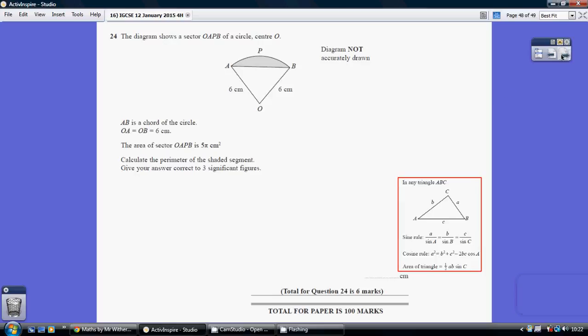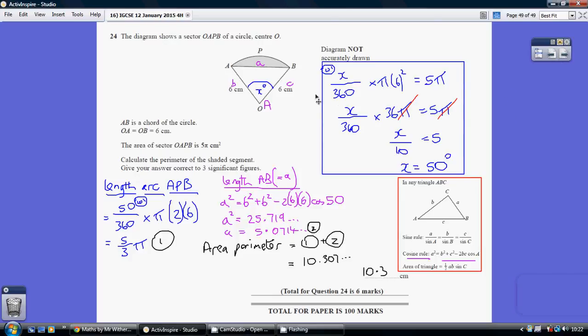Question 24. Now, we're being asked to work out the length of the perimeter of the shaded segment, so the length from A to B, that's little a, added together with the curvy length, the length of the arc APB or BPA.